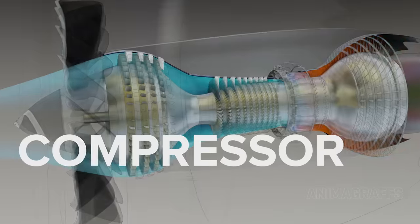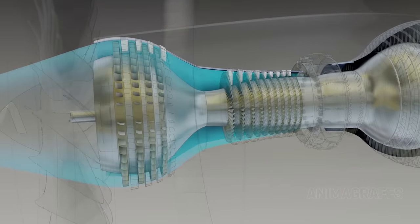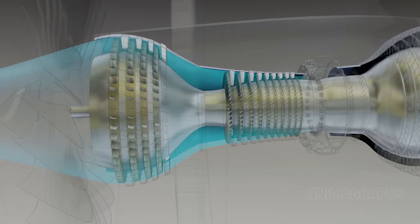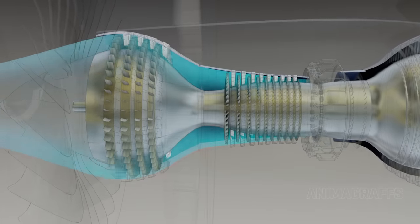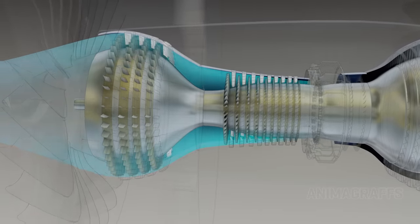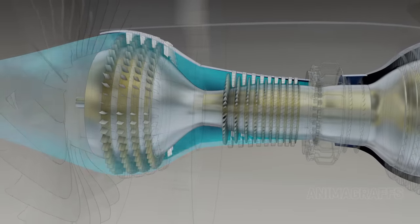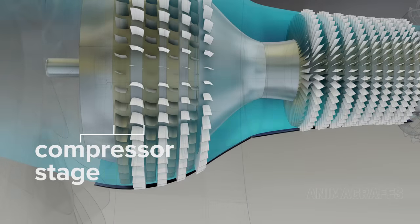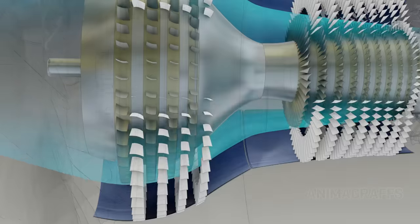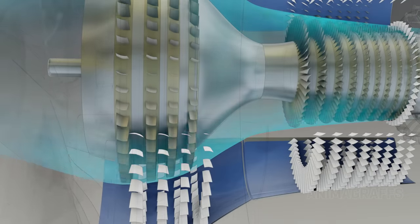The compressor. Compressed air makes for a much more powerful combustion reaction relative to engine size. Compression happens in stages that force incoming air into an increasingly narrow chamber. A single compressor stage is comprised of a spinning rotor paired with a ring of stationary stator vanes, which are attached to the core casing.